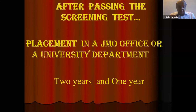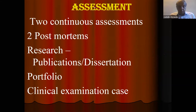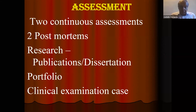After passing the screening test, you are placed in the JMO office or a university department. You are covered in the university system as well as in the health department — two years in the JMO office and one year in the university department. The assessment for the MD includes two continuous assessments, two post-mortem examinations, research and publications or dissertations, a portfolio of cases, and a clinical examination.